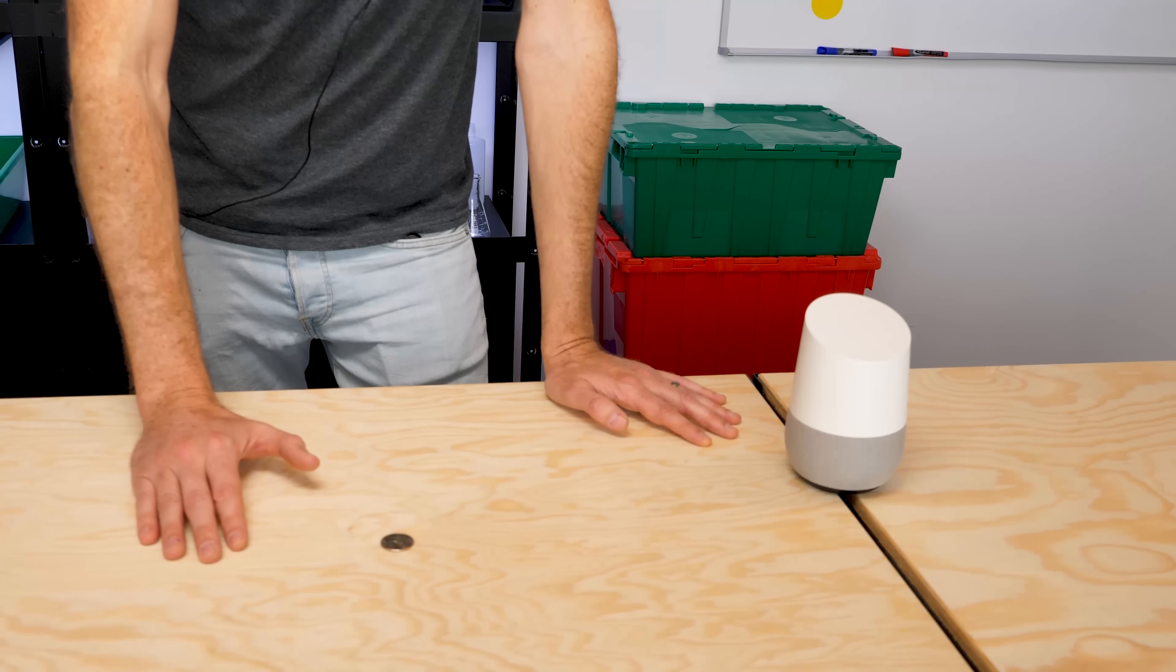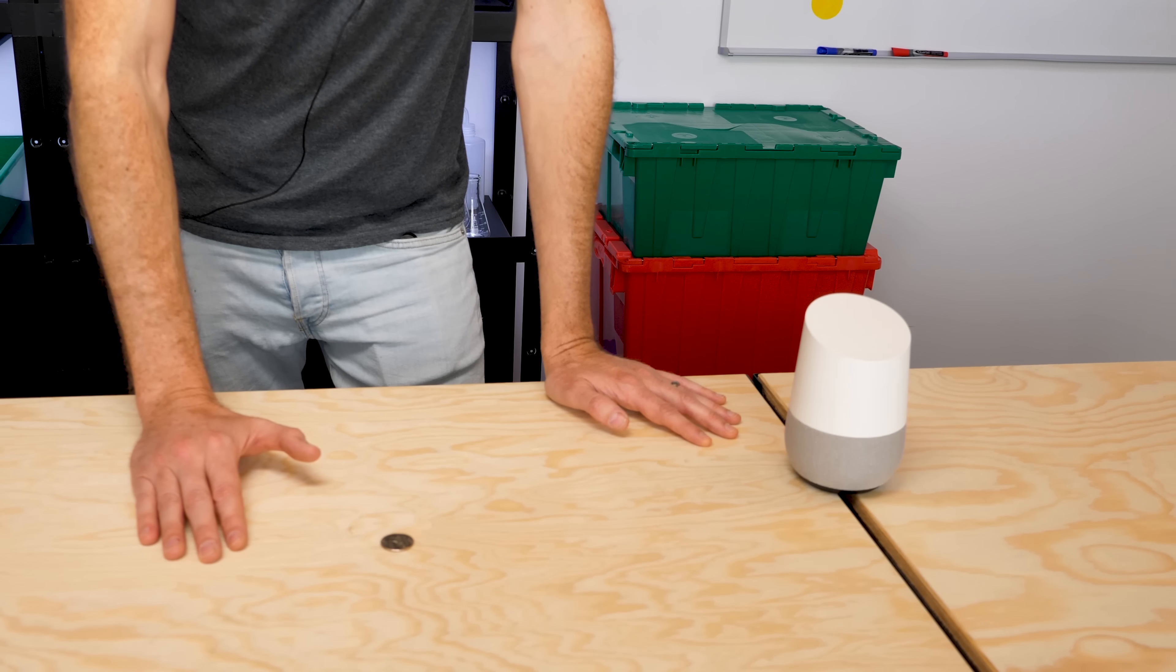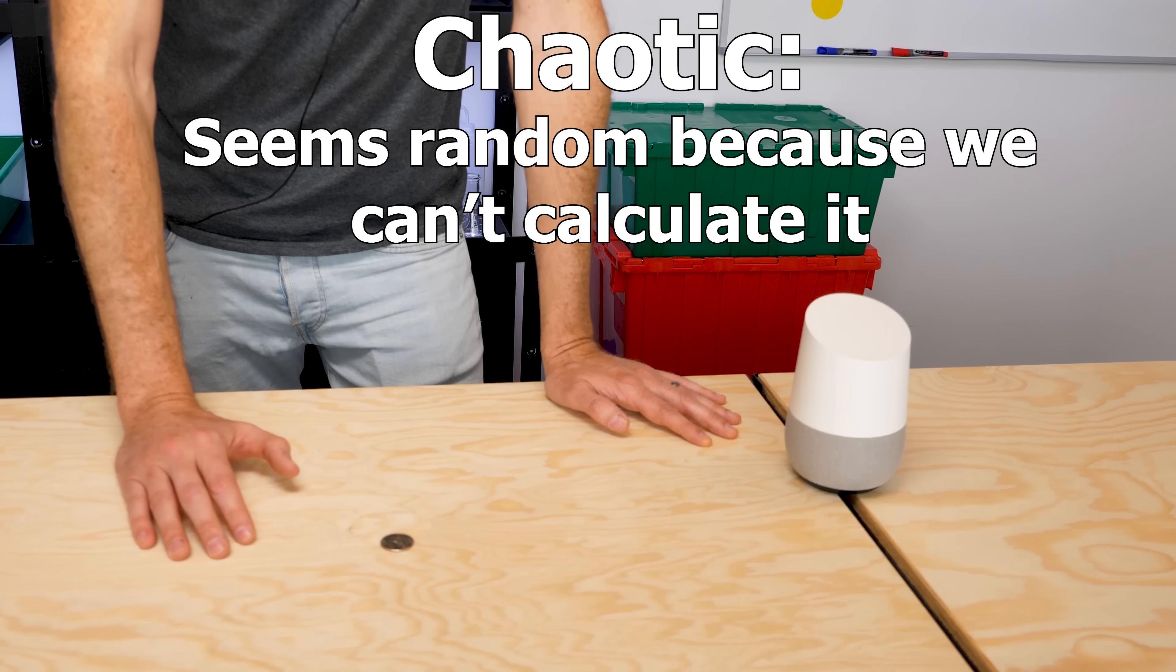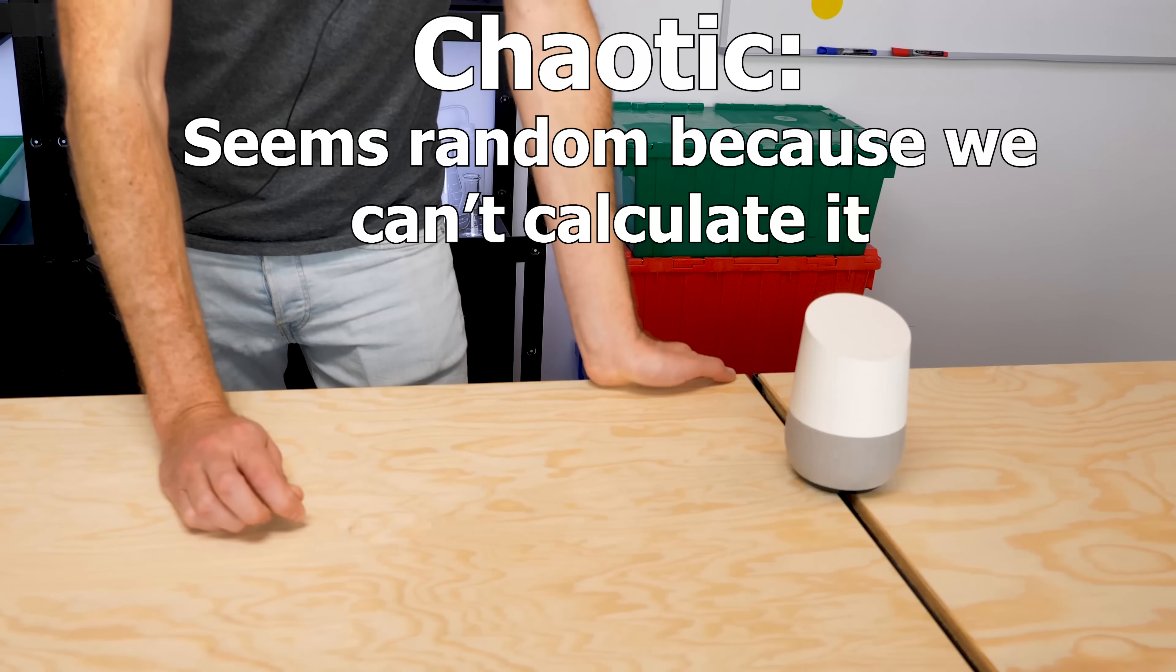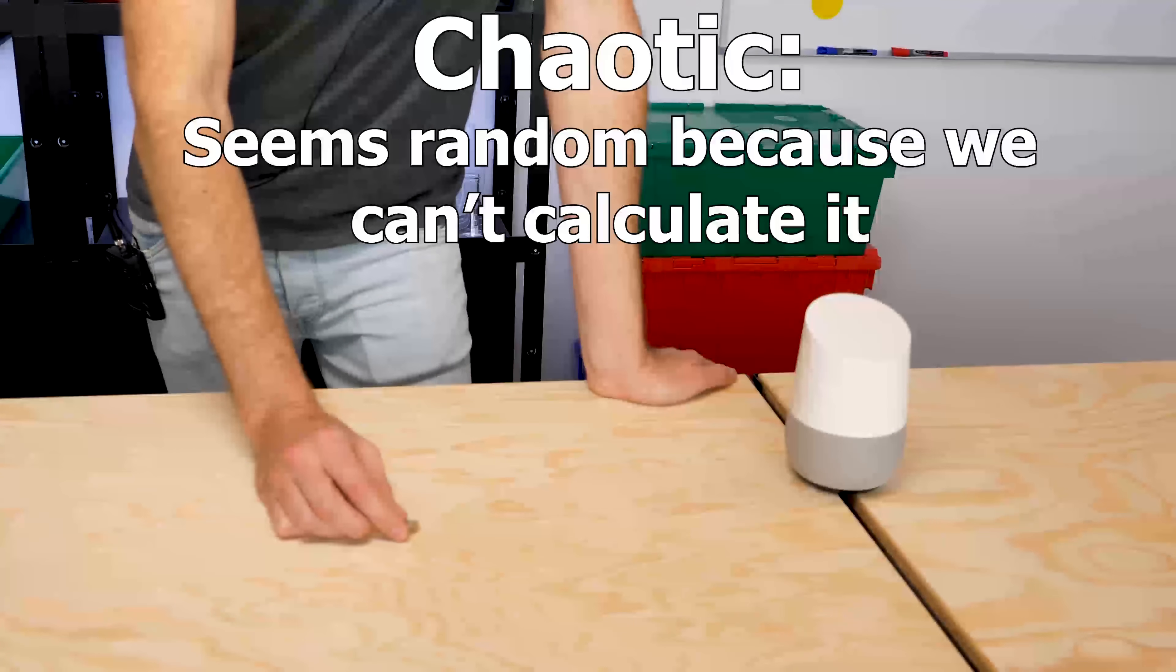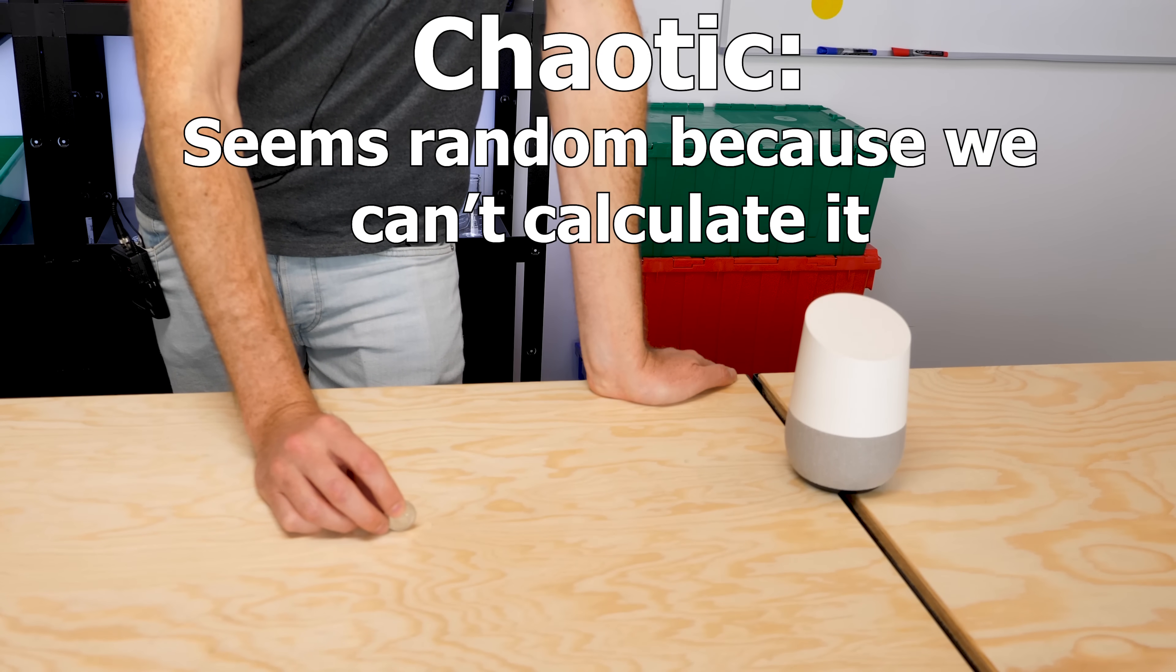So the more correct term for this is actually not a random system, but a chaotic system. And a chaotic system is one that appears random, simply because we don't know all the information to predict the results.